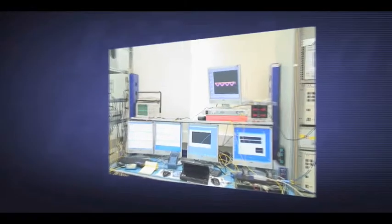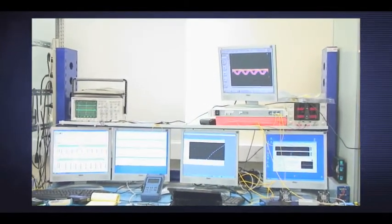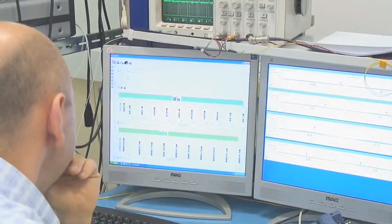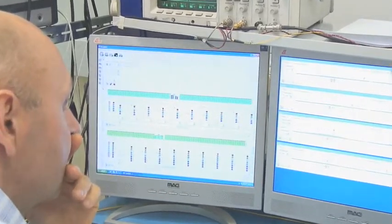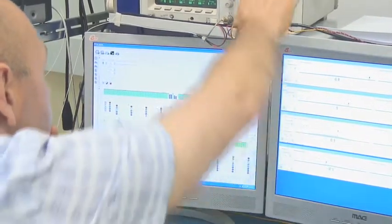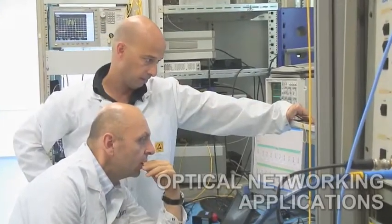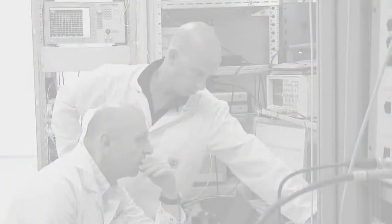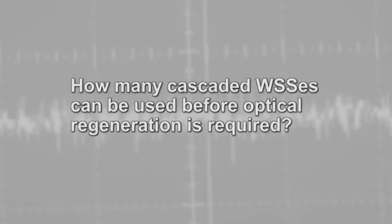To ensure interoperability of its products, Finisar has implemented a multi-wavelength recirculating loop operating at 40 Gbps. This testbed is used for evaluating and demonstrating product performance in a range of real-world optical networking applications.